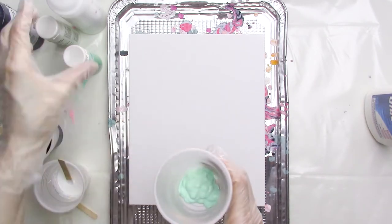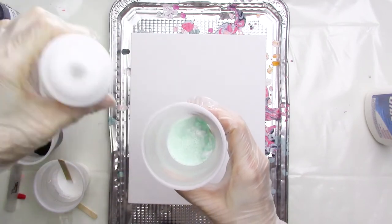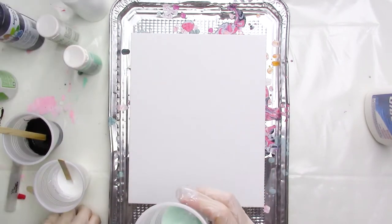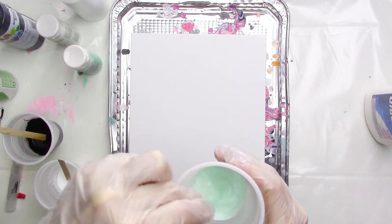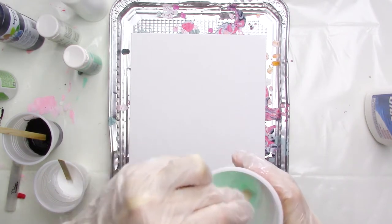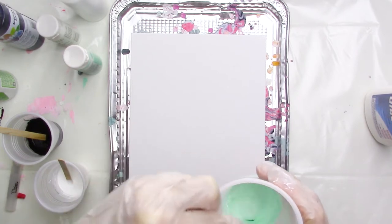I keep my pouring medium in these little condiment bottles, which makes it really easy to add to the paint. If you want to see a more in-depth look at how I make my pouring medium, as well as a step-by-step walkthrough of all of the tools and supplies that I typically use for acrylic pour painting, check out the video at the link that should be popping up now.